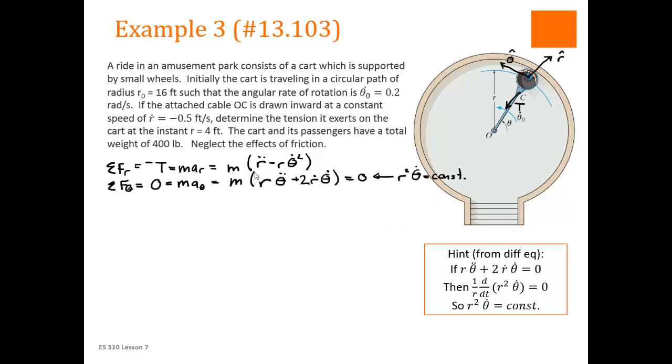So to find this a_r and r squared theta dot and everything else, we need to know what all of these various r's are. So let's start with what we know. We have initial conditions.